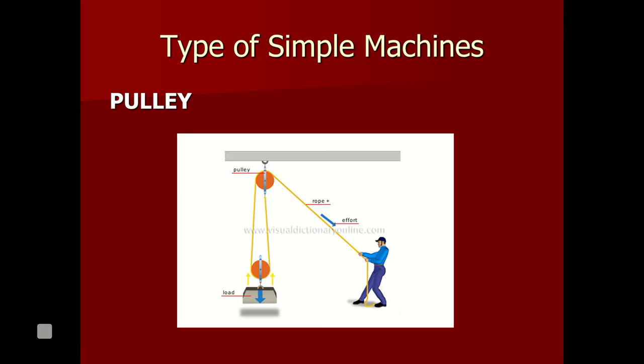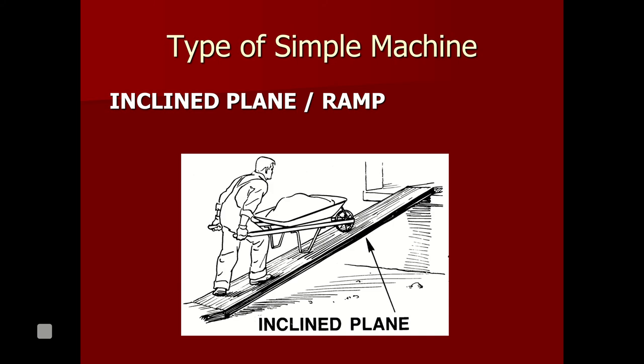A pulley is another simple machine. It helps redirect the direction of the force and also helps you apply less force to lift a heavier object. We have an inclined plane, which, just like a pulley, makes work easier. You don't have to apply as much force to get an object up a hill, up a height, into a truck, etc. — versus having to lift and carry the whole weight. With the inclined plane, you're only lifting a partial amount of the weight.